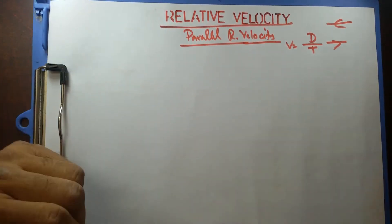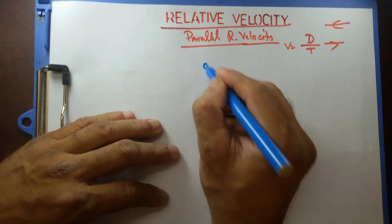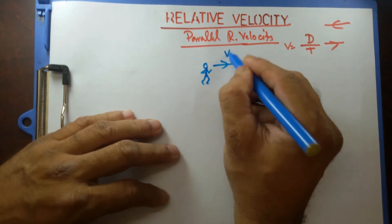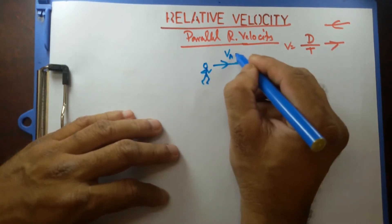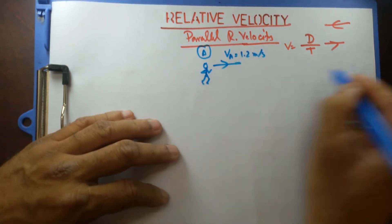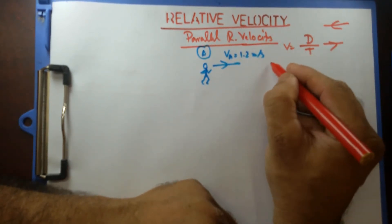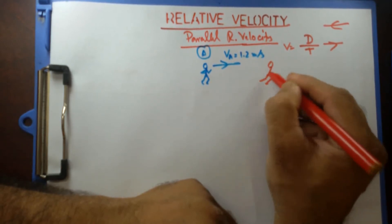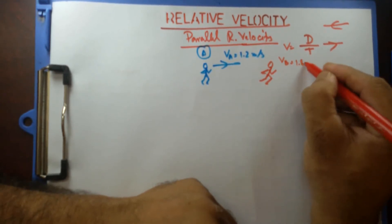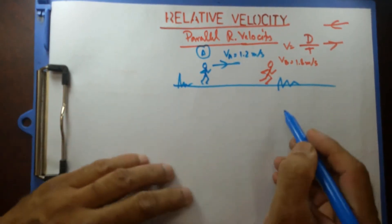Everything is moving — it depends on who is the observer. Let's say this person A is walking in this direction at 1.2 meters per second. And then there is another person B who is actually running at 1.8 meters per second. They are running on a straight line, parallel.